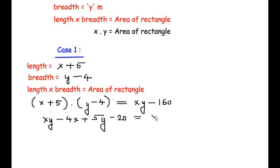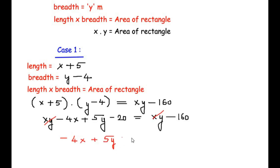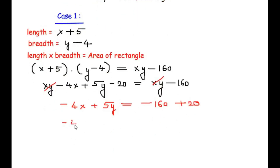Setting this equal to xy minus 160, the xy terms cancel from both sides. We are left with −4x + 5y − 20 = −160. Taking −20 to the other side gives −4x + 5y = −160 + 20 = −140. Let us consider this as equation 1.